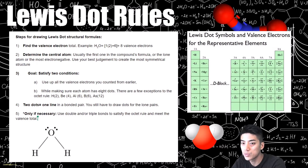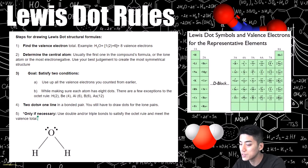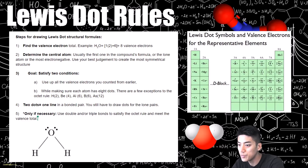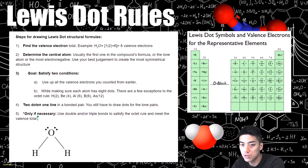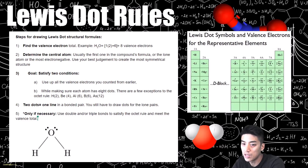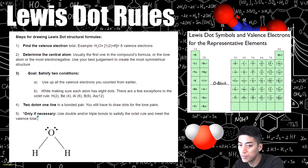There are five basic rules to follow when drawing Lewis dot structures. Rule one: find the valence electron total — for water, that would be eight valence electrons. Rule two: find the central atom, which is usually the lone element in the formula or the most electronegative one. Rule three: satisfy two conditions — condition A is to use up all the valence electrons, and condition B is to make sure each atom has eight dots. You can single bond, double bond, or triple bond atoms — do whatever it takes.